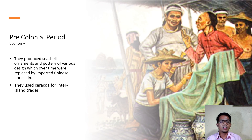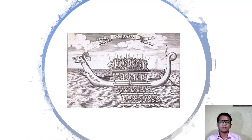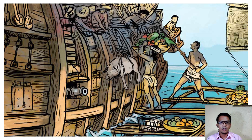For the economy during the pre-colonial period, Filipinos produced seashells, ornaments, and pottery of various designs, which over time were replaced by imported Chinese porcelain. They also used the caracoa for inter-island trade. This graphical picture shows the caracoa used by early Filipino traders and illustrates how trading happened during the pre-colonial period.